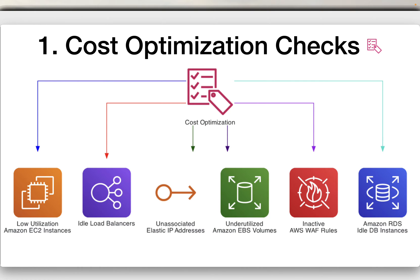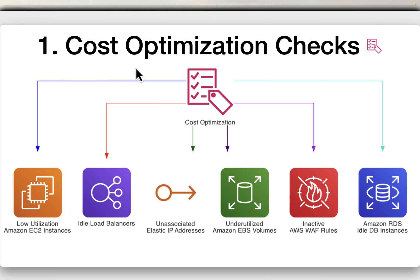Now let's go over some of the checks in each category — this is an indicative list rather than exhaustive. Under cost optimization, checks include low utilization on Amazon EC2 instances, idle load balancers, unassociated elastic IP addresses, underutilized Amazon EBS volumes, inactive AWS Web Application Firewall rules, and Amazon RDS idle DB instances. These fall under cost optimization because you are paying for resources you are not fully using.